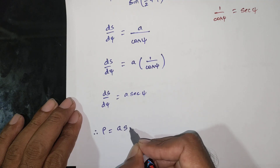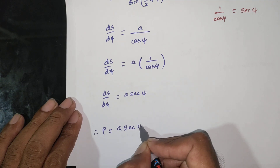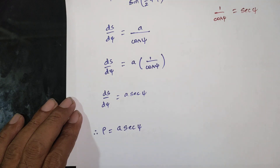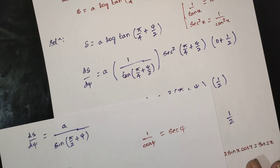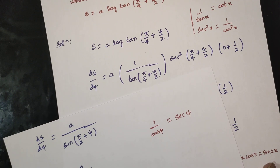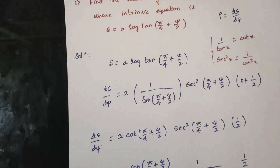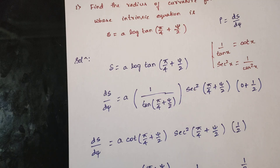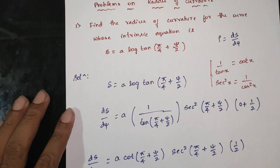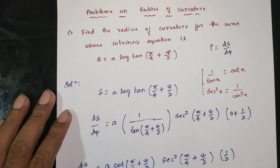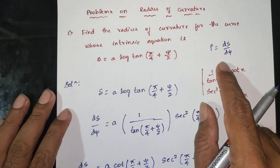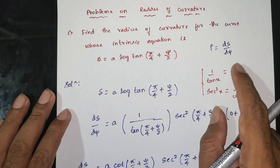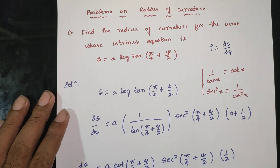Therefore, the radius of curvature ρ = ds/dψ = a·sec(ψ). Thank you.